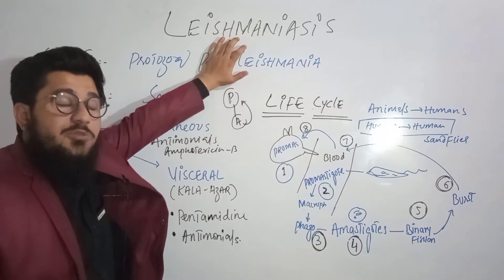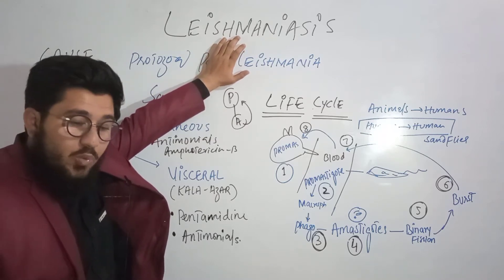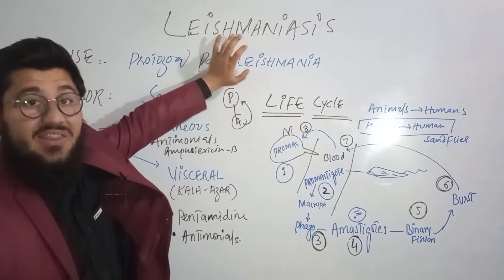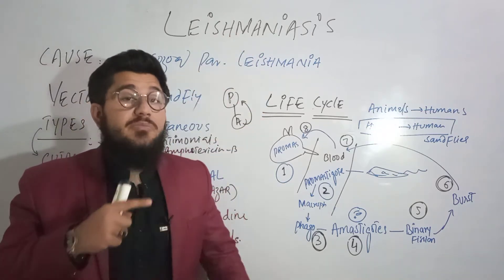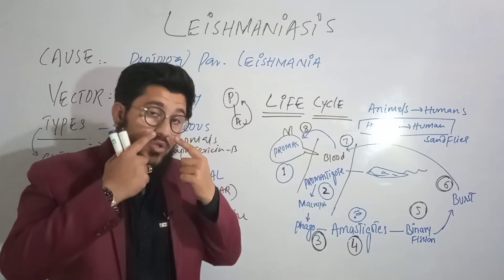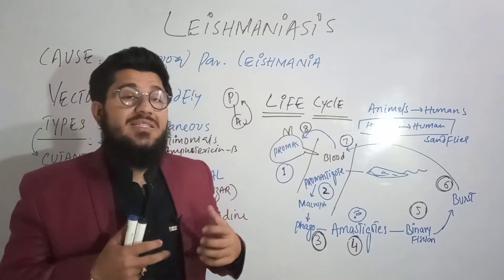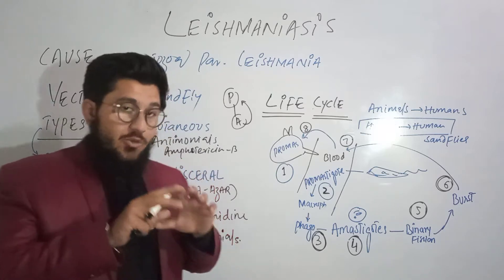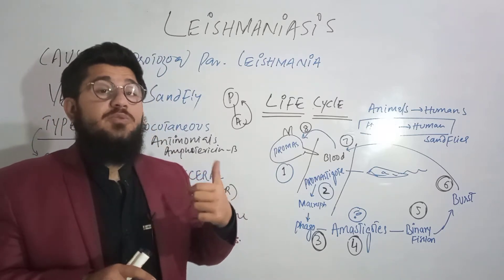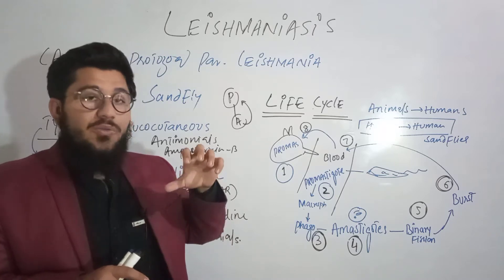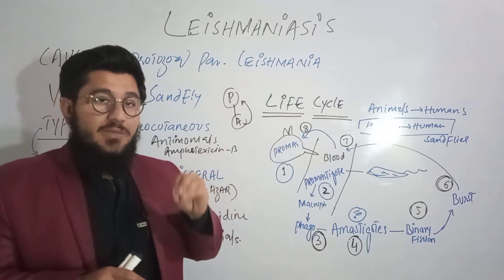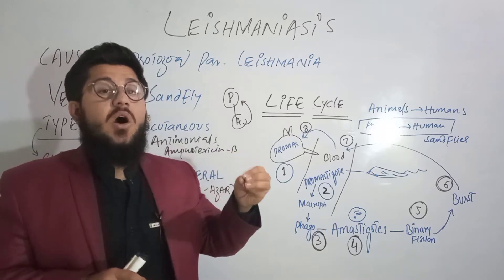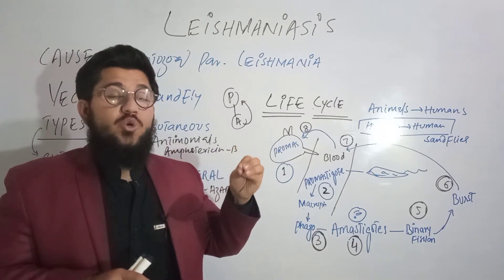What is Leishmaniasis? In simple words, it is a disease caused by a protozoal parasite which affects the skin, mucous membrane of the mouth and nose, and some visceral organs like the spleen, liver, and bone marrow. These are the very important sites affected by this protozoal parasite.